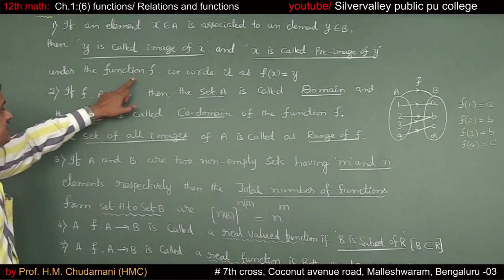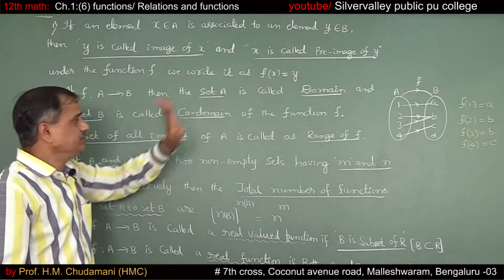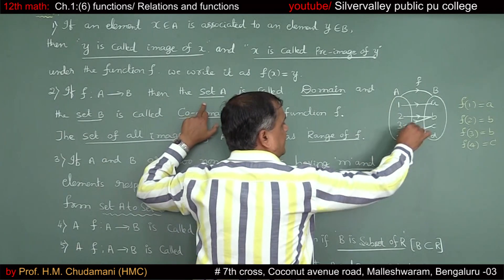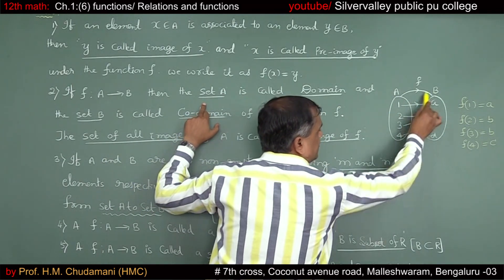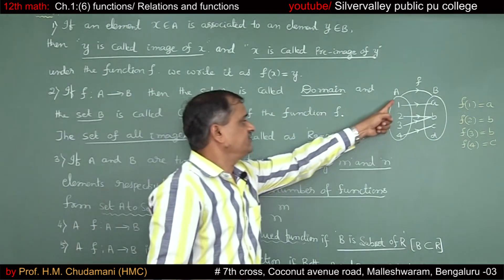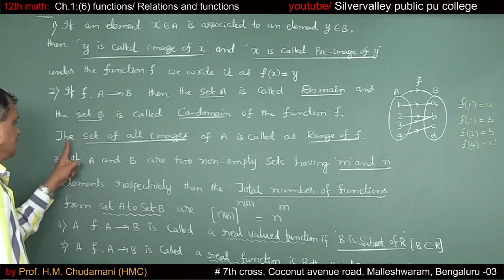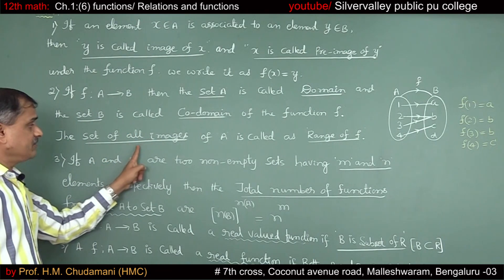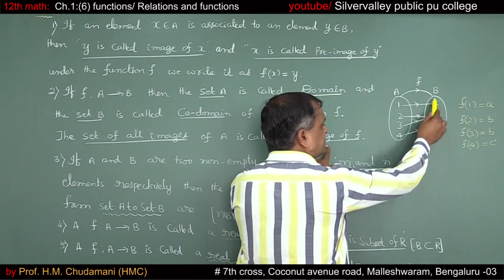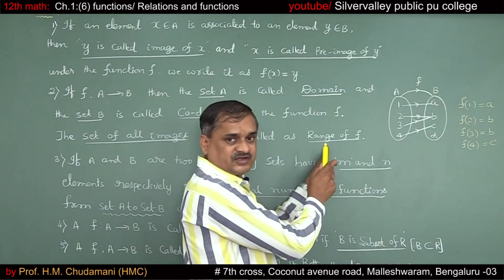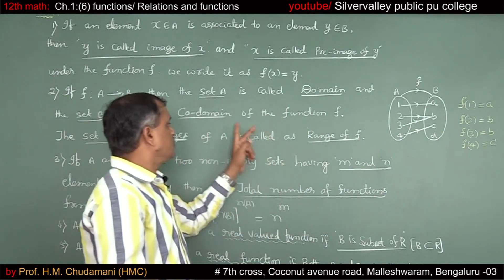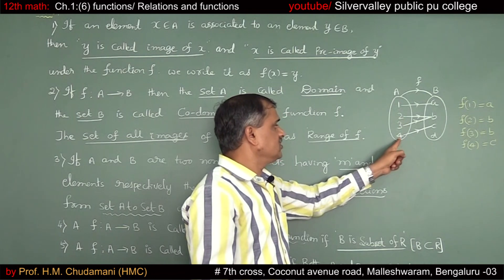Next, Note 2: Under function F, we write F(X) = Y. If F is from A to B, then the set A is called the domain and the set B is called the co-domain. The set of all images of A is called the range of F. For example, A, B, C are the images, but D is not the image of any element of set A. So A, B, C is the range, whereas A, B, C, D is the co-domain, and {1, 2, 3, 4} is the domain.